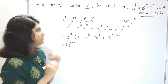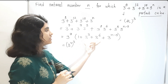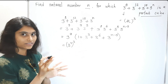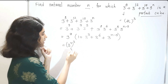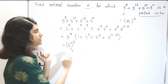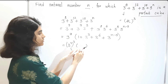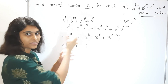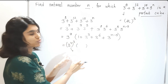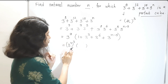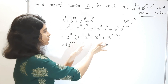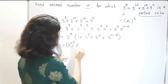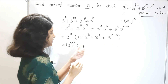Now, if somehow we can show that the bracket (1 + 3^3 + 3^6 + 3^(n−9)) is a cube of some number, then we are done. Because here we have a cube times another cube, and the product of two cubes is again a cube. So let us write this number in terms of a cube of some number.